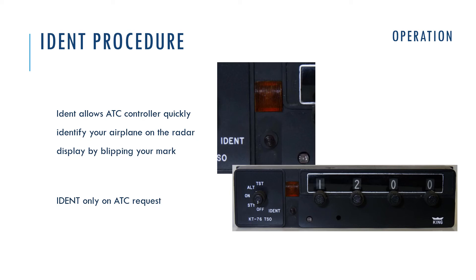The IDENT procedure should be mentioned separately. This procedure helps the air traffic controller quickly identify your airplane — your dot on the radar — by making it blink. For example, if the controller wants to find you quickly on the display among many dots, they can ask you: 'Oscar Kilo Foxit Alpha Tango, IDENT.' That means you push the IDENT button, and your dot on the display will blink so the ATC controller can find you quickly.